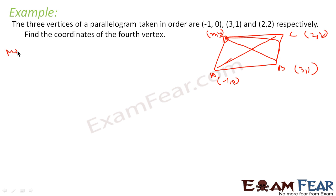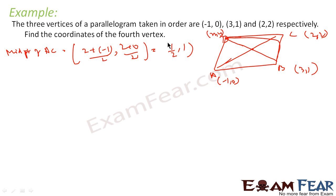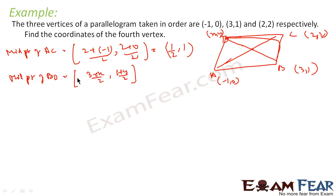The midpoint of AC is (2 + (-1))/2 comma (2 + 0)/2, that is (1/2, 1). Similarly, the midpoint of BD is (3 + x)/2 comma (1 + y)/2. Since both midpoints should coincide, we get (3 + x)/2 = 1/2, so x = -2. And 1 = (1 + y)/2, solving gives y = 1.